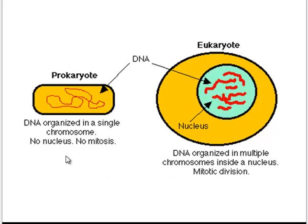Here in this diagram, you can see the difference between the DNA of a prokaryote and the DNA of a eukaryote. A prokaryote's DNA is one big circular chromosome, and there's no nucleus containing that chromosome. In a eukaryote, in contrast, the nucleus is protecting the DNA, and the DNA is found in multiple linear chromosomes.